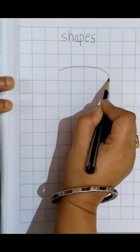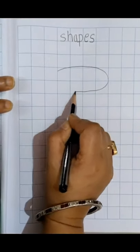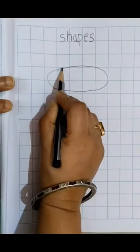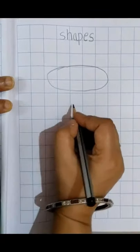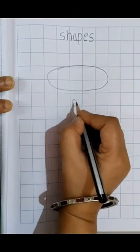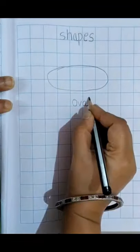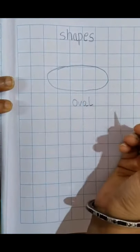We will make it like this way, and yes, it is an oval. Yes, and below it we will write O, V, A, and L. Oval.